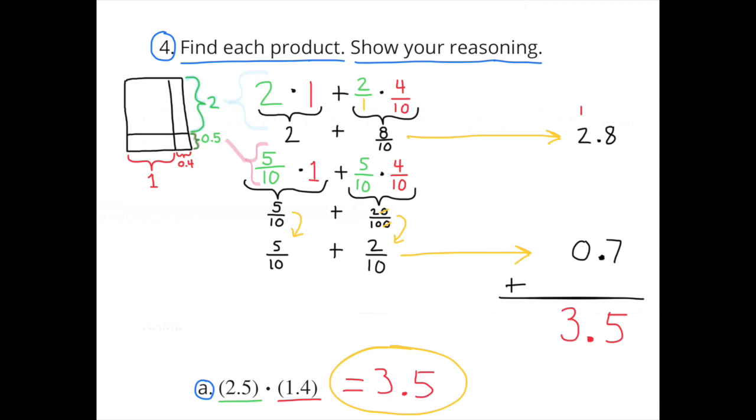The second one measuring 2 × 0.4, the third one measuring 0.5 × 1, and the last one measuring 0.5 × 0.4. In the work shown here, I figured out the product of a rectangle with dimensions 2.5 × 1.4. I found the area of all 4 sub-rectangles and added them together. The area totals 3.5. So the product of 2.5 and 1.4 is 3.5.